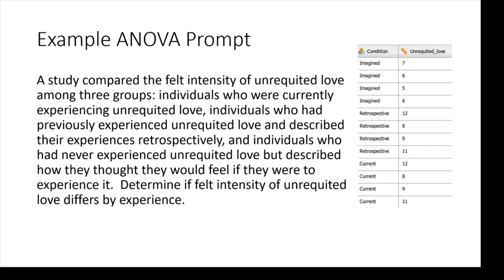The data are going to look a lot like how the independent t-test data would come to us. But in the independent t-test, we would have had just two conditions. Now that we have three conditions, we have to run an ANOVA. So let's do our six steps.